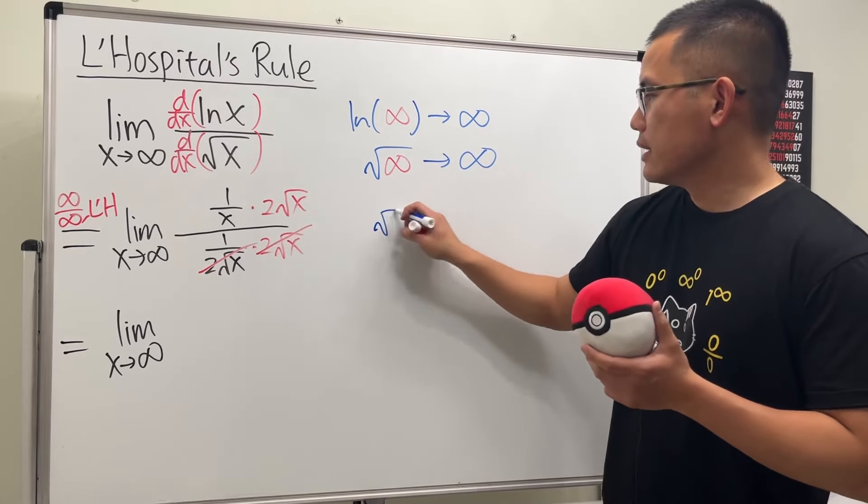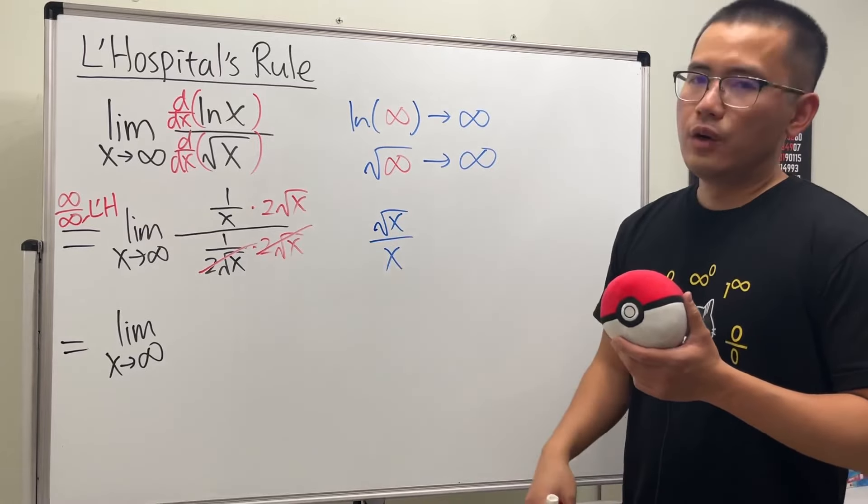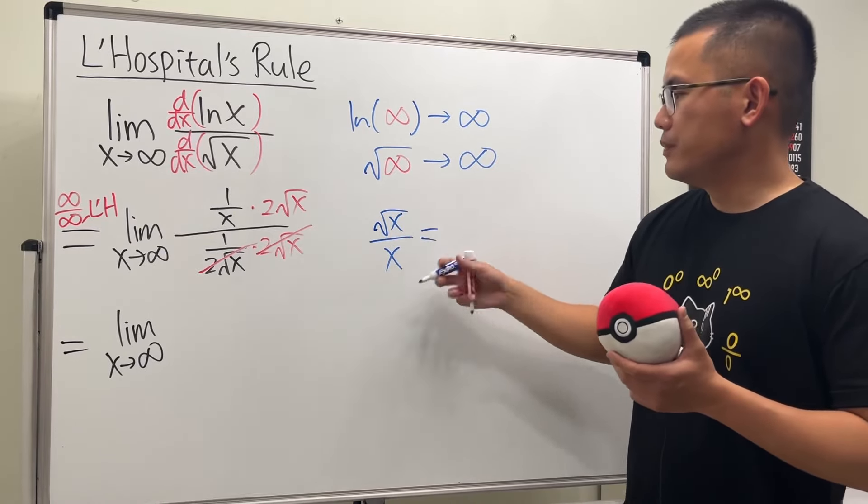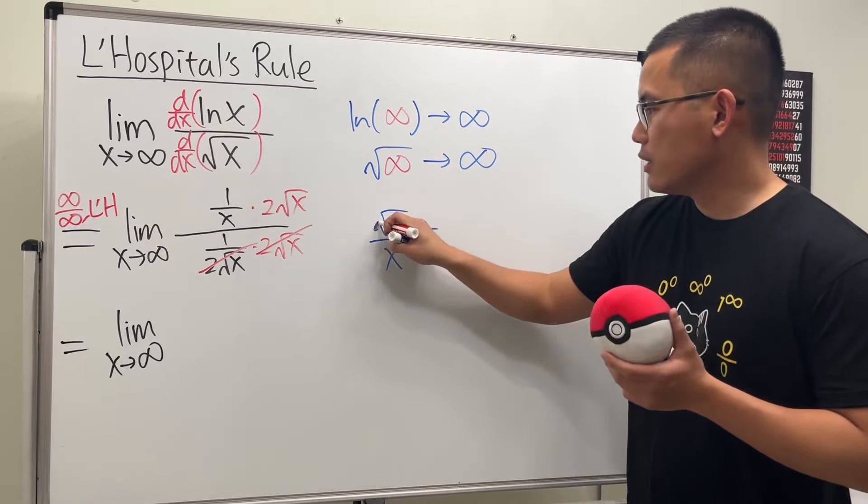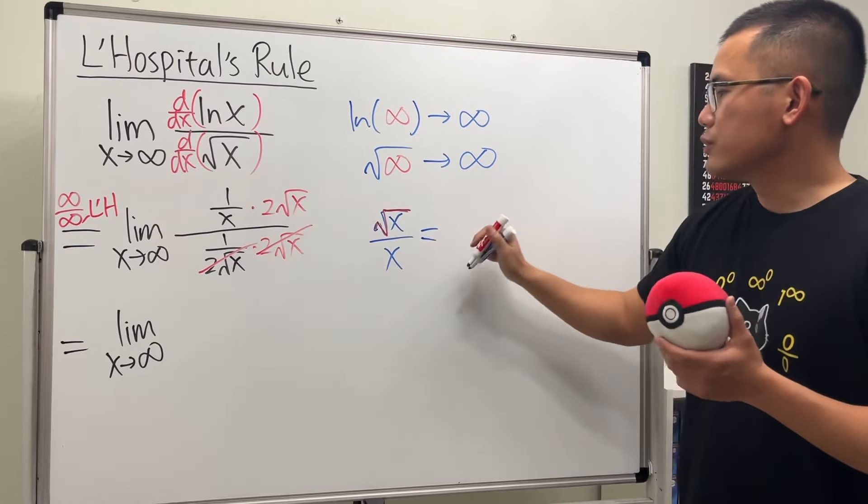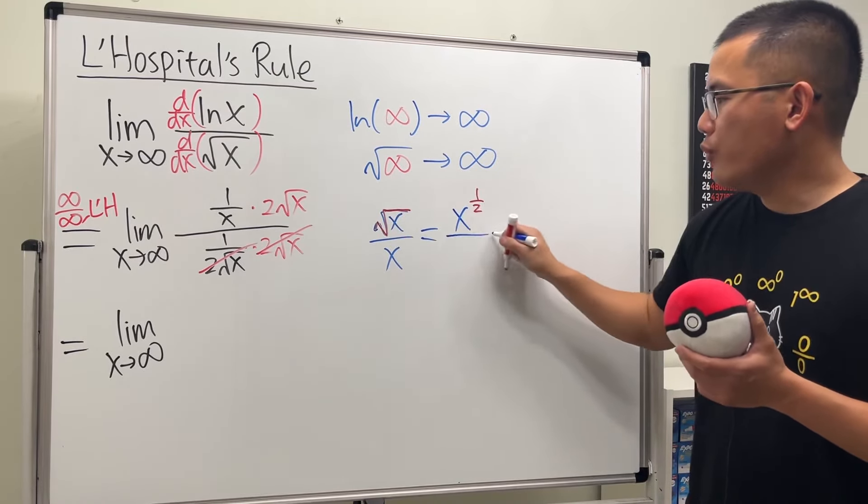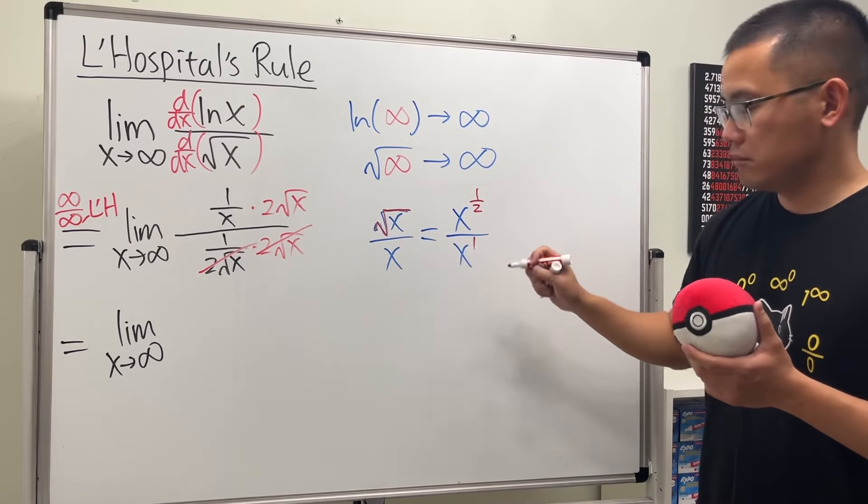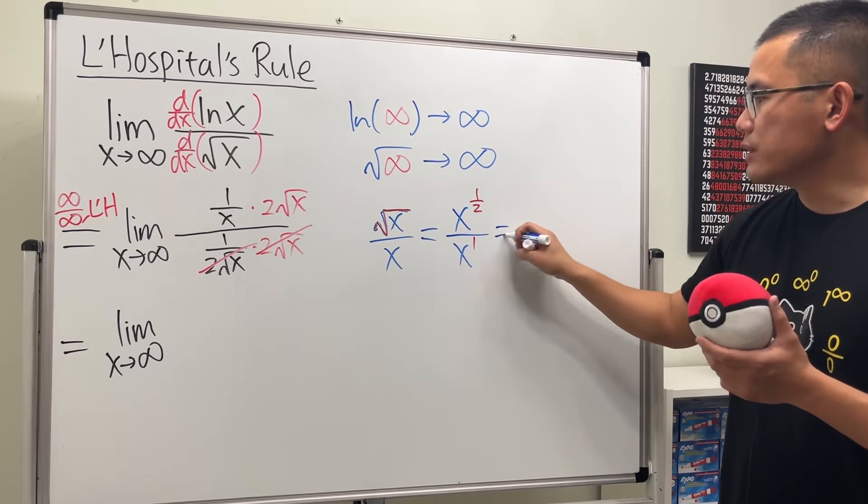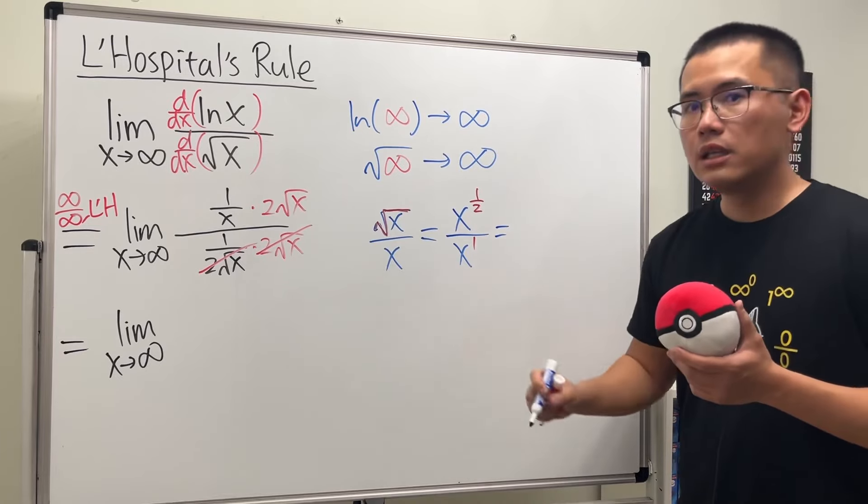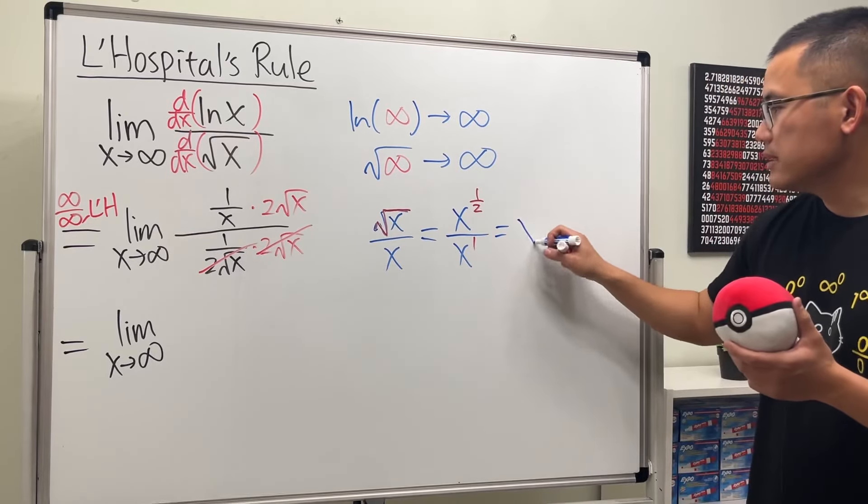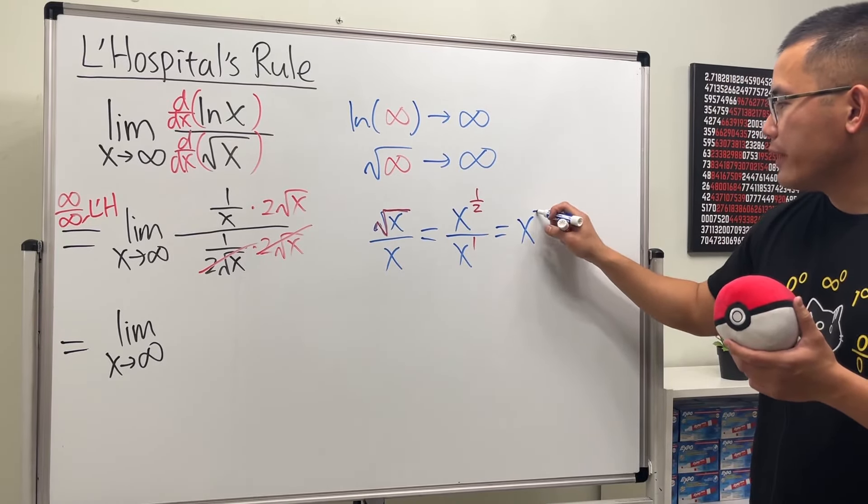Square root of x over x. One way to simplify this is look at the exponent as the fraction of power. This is the same as x to the 1/2 power over x to the first power. And then subtract the powers. We see 1/2 minus 1 is negative 1/2, so that's x to the negative 1/2 power.